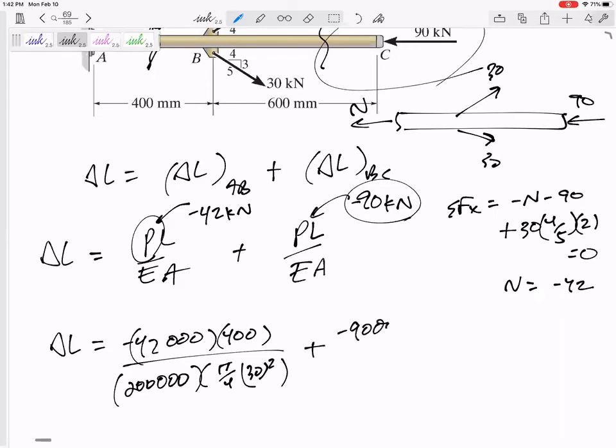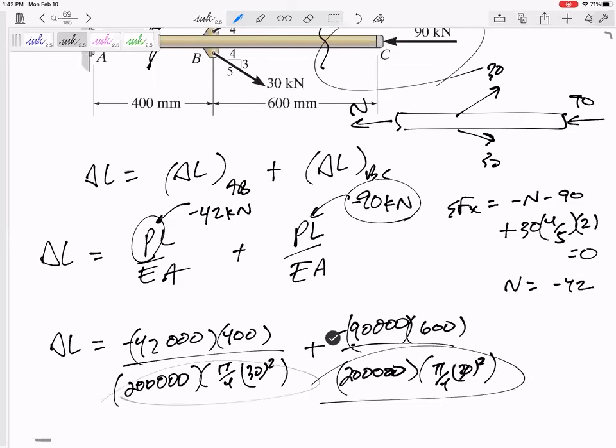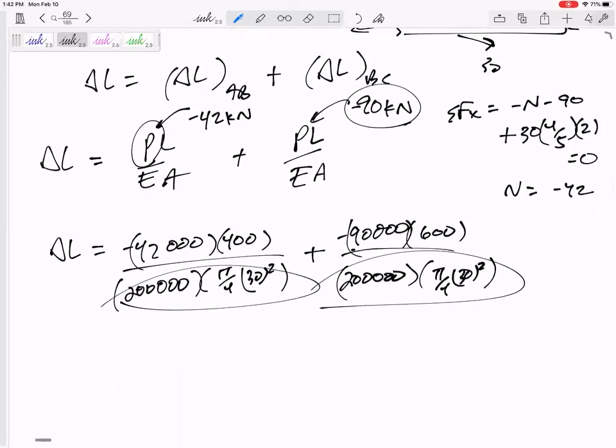and then negative 90,000, its length 600, 200,000 pi by 4, 30 squared. So it really might be beneficial to factor those out and multiply it once, instead of having to type those into your calculator.